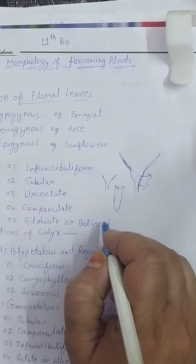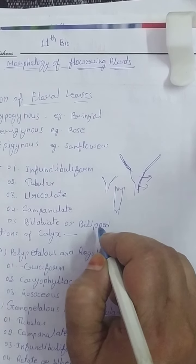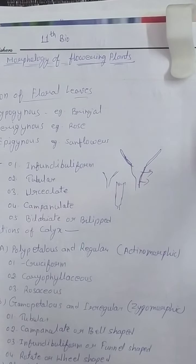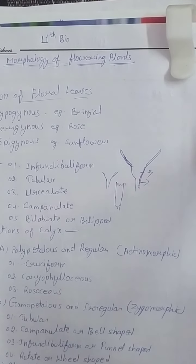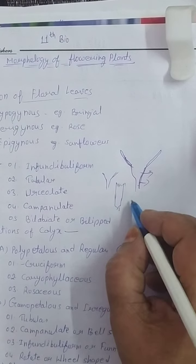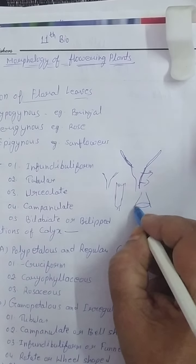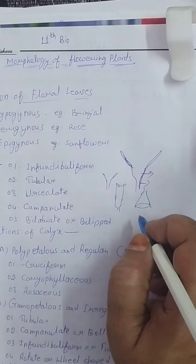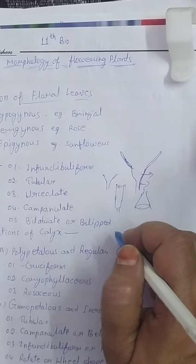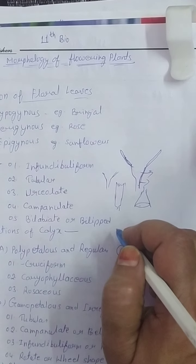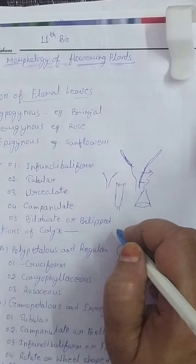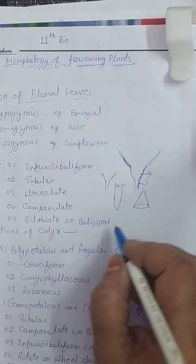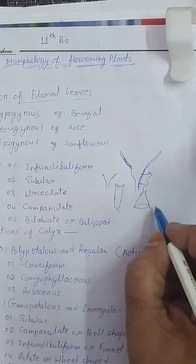Third type is urceolate — pitcher-shaped sepals are called urceolate. Fourth is campanulate, in which the shape of the calyx is like a bell. And bilabiate or two-lipped — when sepals are united but unequal in size and they form a lip-like structure, the calyx is said to be bilabiate. Example is Ocimum or Sesamum.